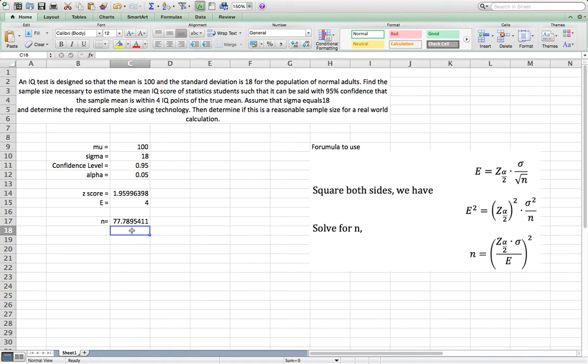Now, is this a reasonable sample size? If you think about the central limit theorem, when n is greater than 30, we consider it a reasonable size. So this 78 is okay.